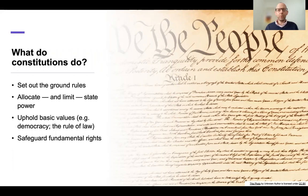In doing this, a constitution will generally allocate power — it will set up a legislature to make the law, it will set up a government to run the country, a system of courts to adjudicate on legal disputes. The constitution will give authority to those different institutions, and in general it will also limit their authority. It will allow them to do certain things, but it will draw certain lines and stop them from interfering in certain aspects of people's lives.